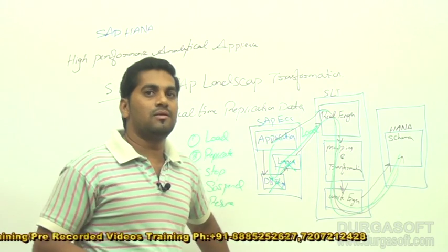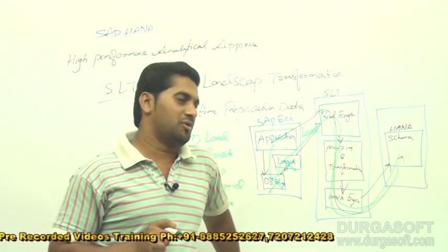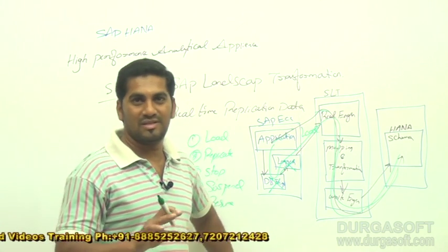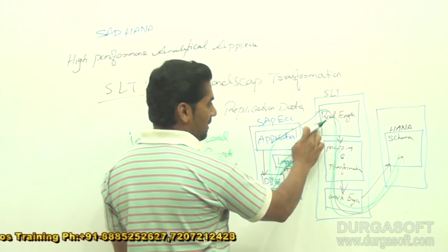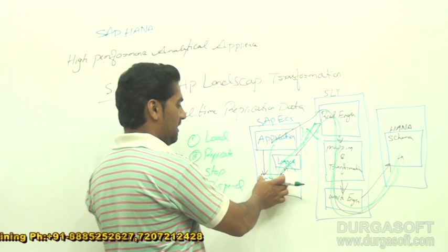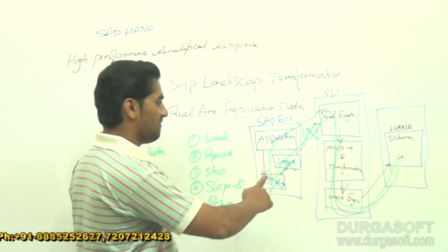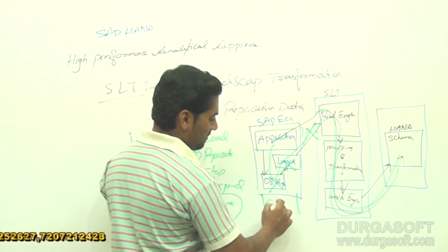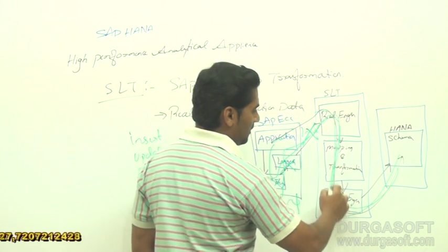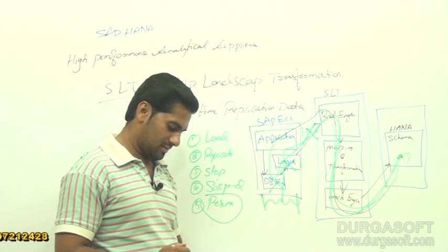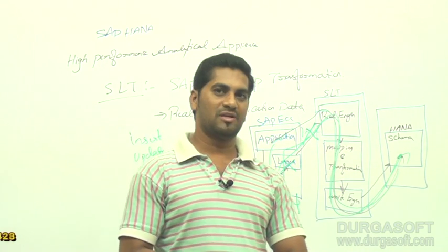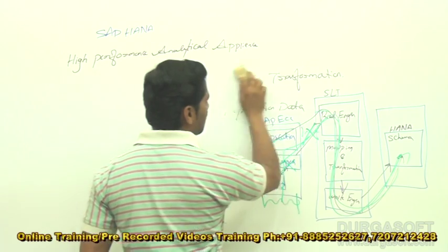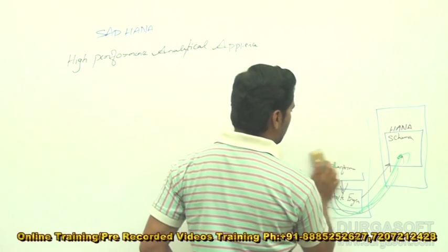When you do suspend, it acts like a pause — the connection is paused but the DB trigger and logger file continue working. When you resume, all the data buffered from the pause point is loaded to the target system. So the options are: load, replicate, stop, suspend, and resume. This is how the different extraction scenarios take place in SLT.